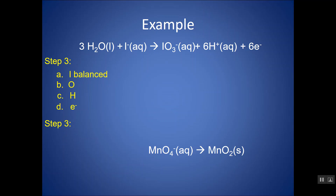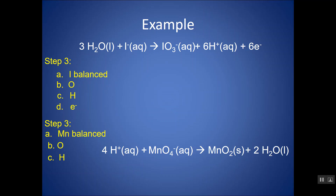For the bottom (manganese) half reaction: balance Mn — already balanced. Balance oxygen using H2O — four oxygens on the left, two on the right, so add two H2O on the right. Balance hydrogen — four hydrogens introduced on the right, so add four H⁺ on the left. Balance charge with electrons: four H⁺ and one MnO4⁻ gives 3+ on the left and zero on the right, so add three electrons on the left.